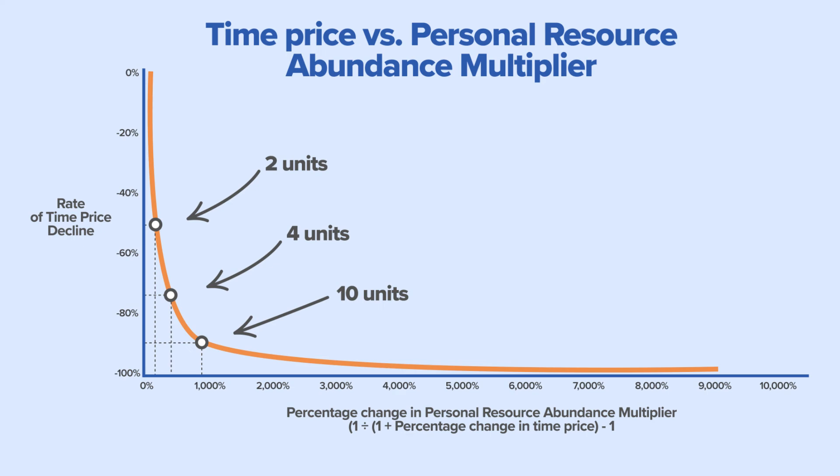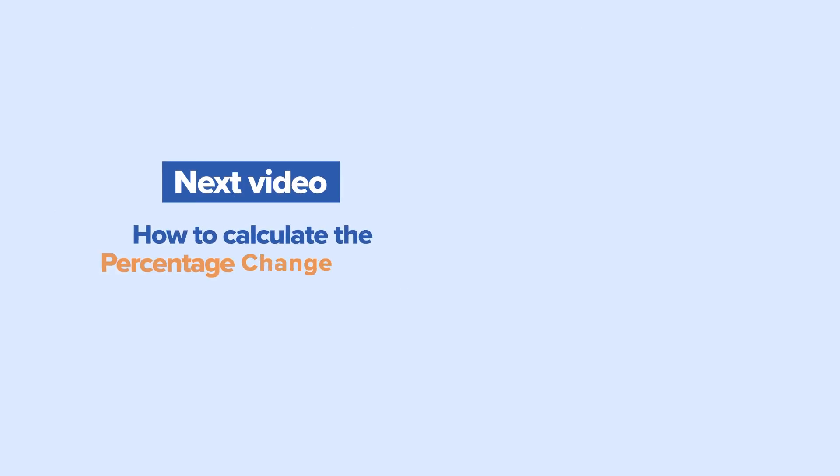As the time price approaches zero, abundance approaches infinity. Please watch the next video in the series on 'How to Calculate the Percentage Change in the Personal Resource Abundance' to learn more about how time prices reveal our true reality.